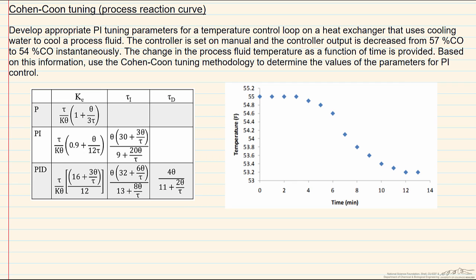So here we are given information about a test that was done where the controller output was decreased from 57 to 54 percent CO instantaneously, and as a result of changing that controller output you are causing a change in your output variable, in this case the temperature of a process fluid in a heat exchanger.